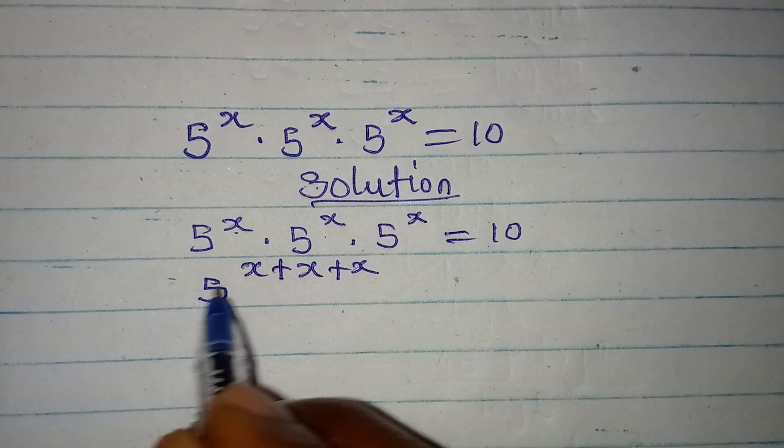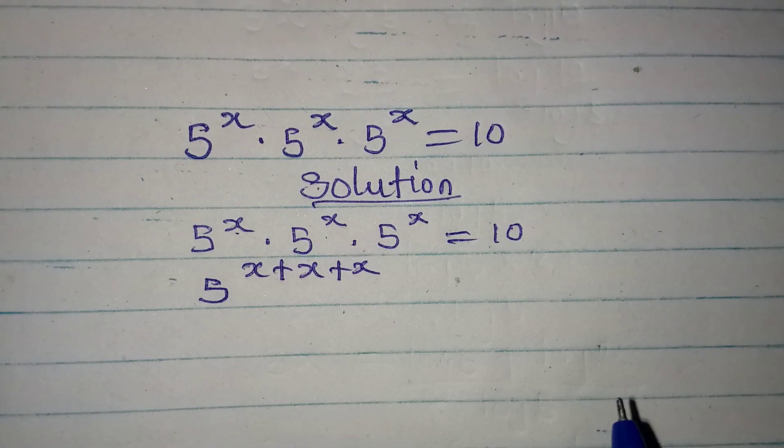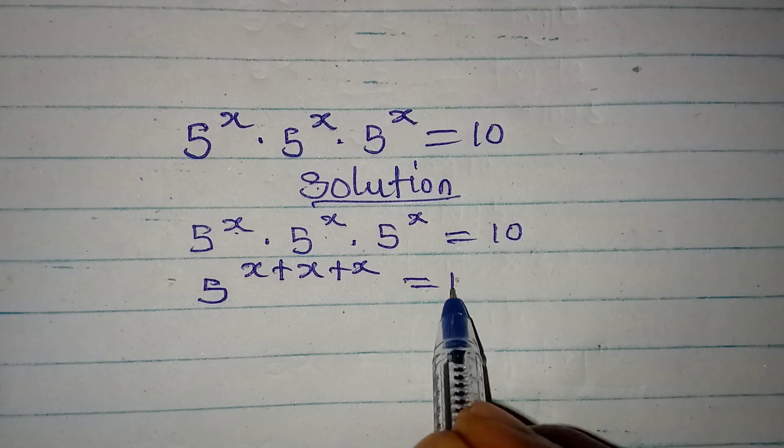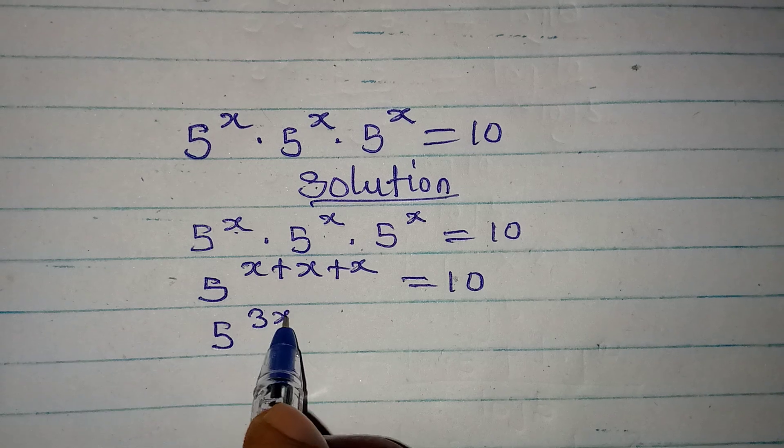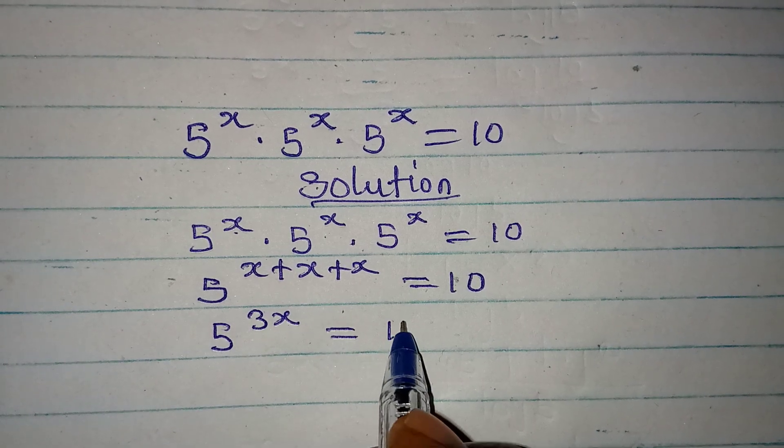We only add this when you are to multiply them like this. This will be equal to 10. So 5 to the power of 3x is now equal to 10.